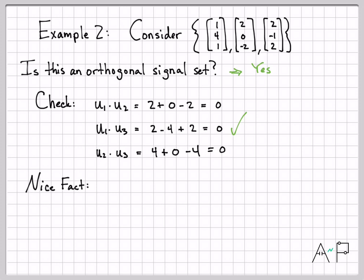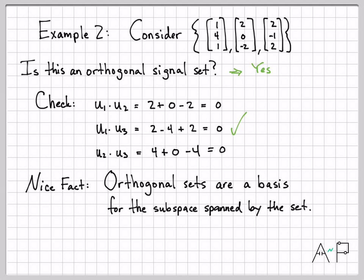All right. So here's another kind of nice fact that'll be useful going forward. If we have an orthogonal set of vectors, it turns out that that orthogonal set is a basis for the subspace spanned by the set. Remember, a basis is a set of vectors, the smallest set of vectors that we can write things as a linear combination. So if I have an orthogonal set of vectors, that right off the bat is a basis.